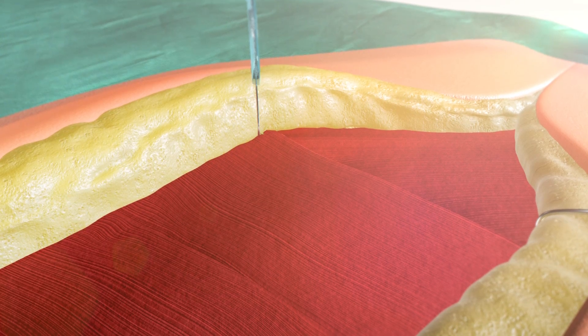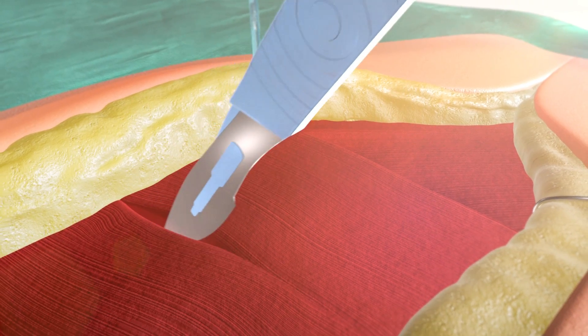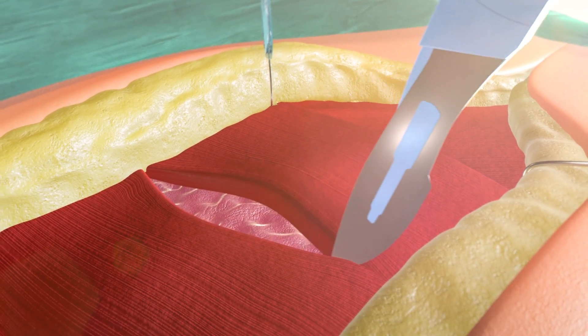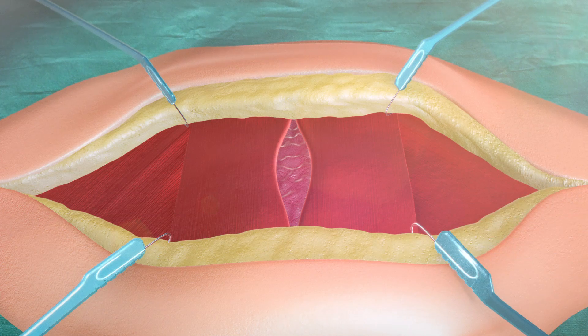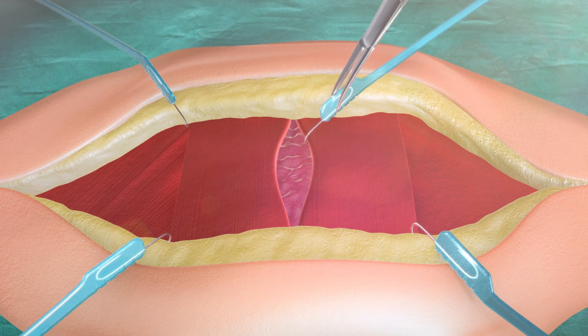Deeper muscle layers or fascia layers can then be separated, and the stays applied to these layers in a circumferential manner, allowing for exposure of deep tissues.